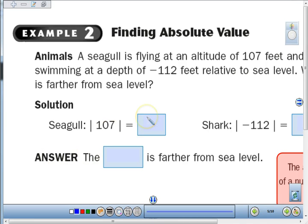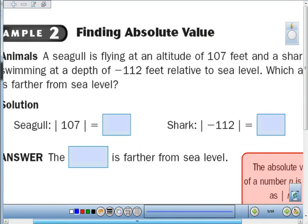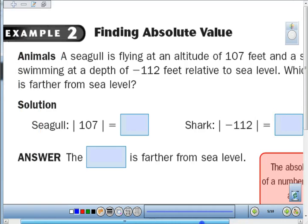If we're looking at a seagull flying at an altitude of 107 feet and a shark swimming at a depth of negative 112 feet relative to sea level, the question is which is farther from sea level? The seagull is actually 107 units away, or in this case 107 feet. The shark is actually 112.